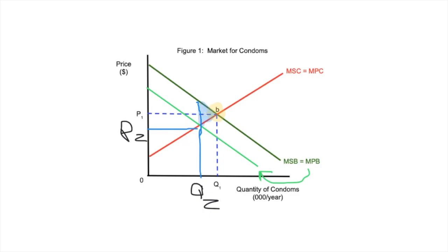Points A, B, and C form our triangle. In a perfect world everybody would use a condom, and the market would operate at point B. But in reality, the market operates at P2, Q2. That means the marginal private benefit is less than the marginal social benefit. If more condoms were consumed, it would be better for society as a whole. Triangle A-B-C represents the potential welfare gain.